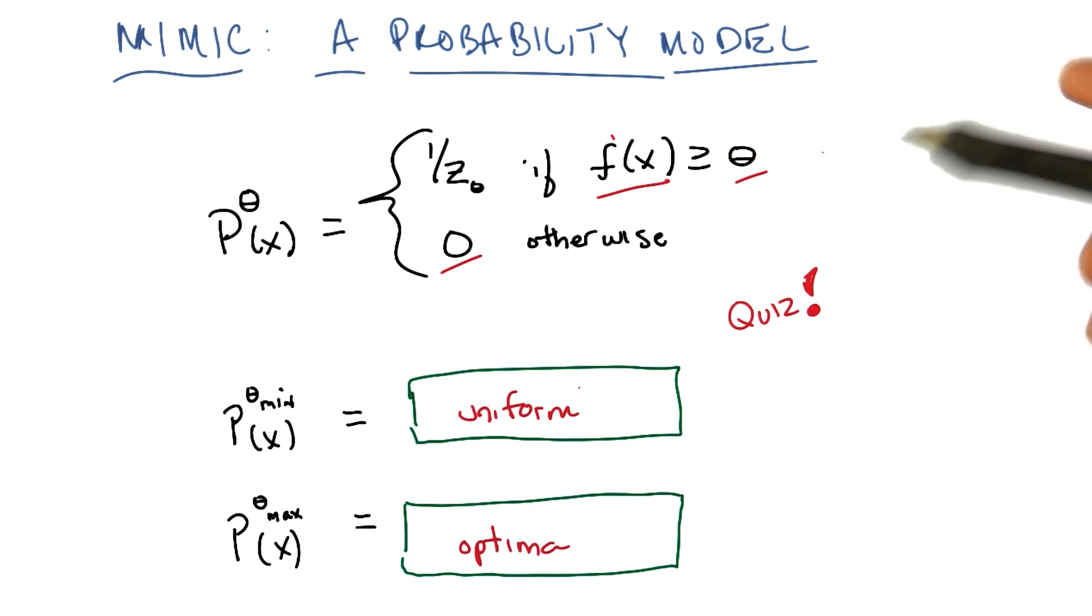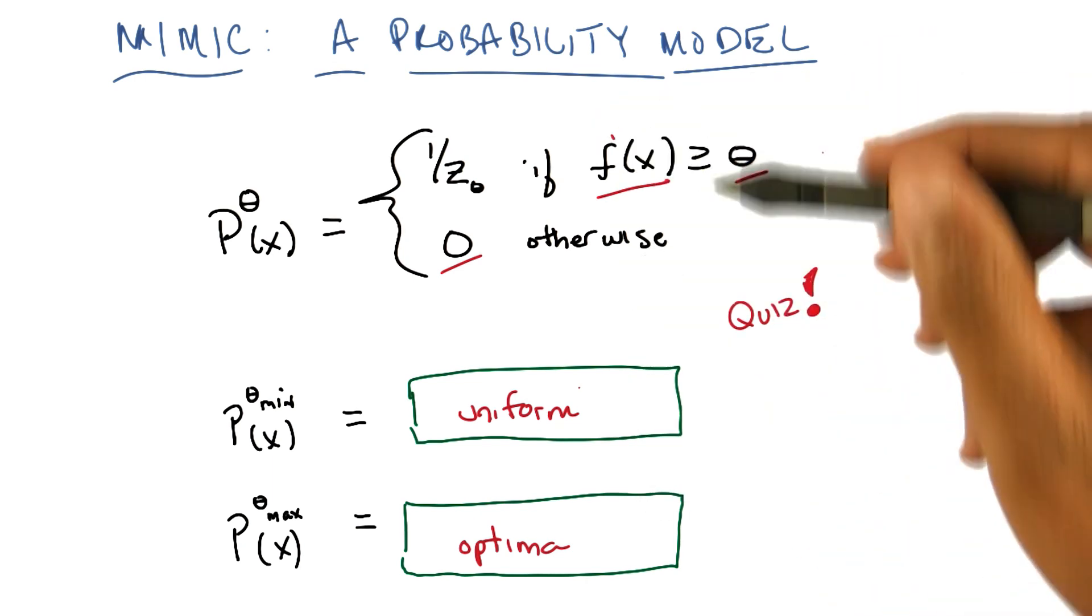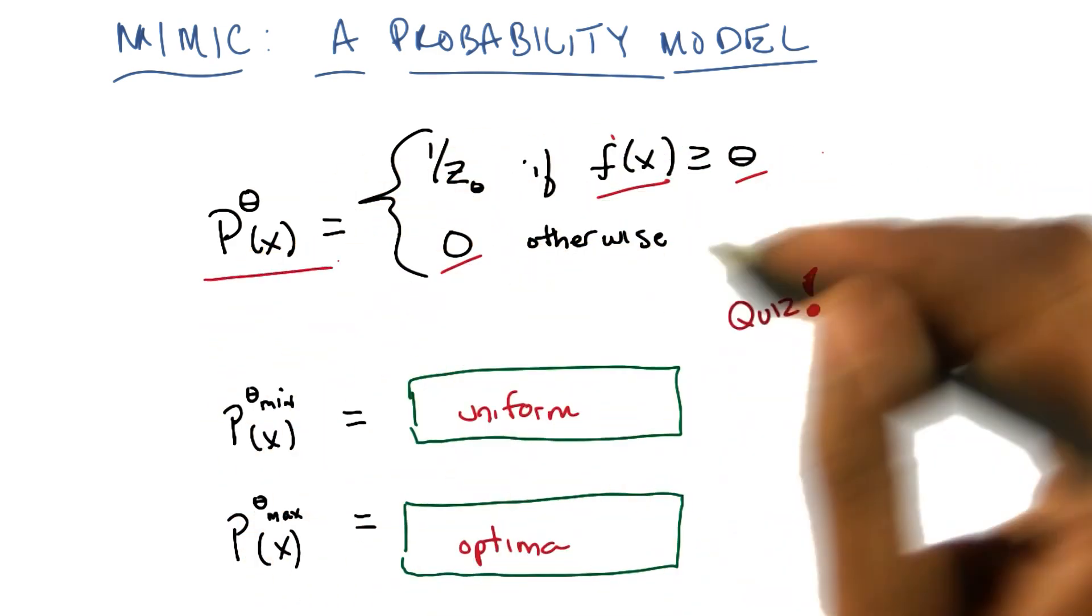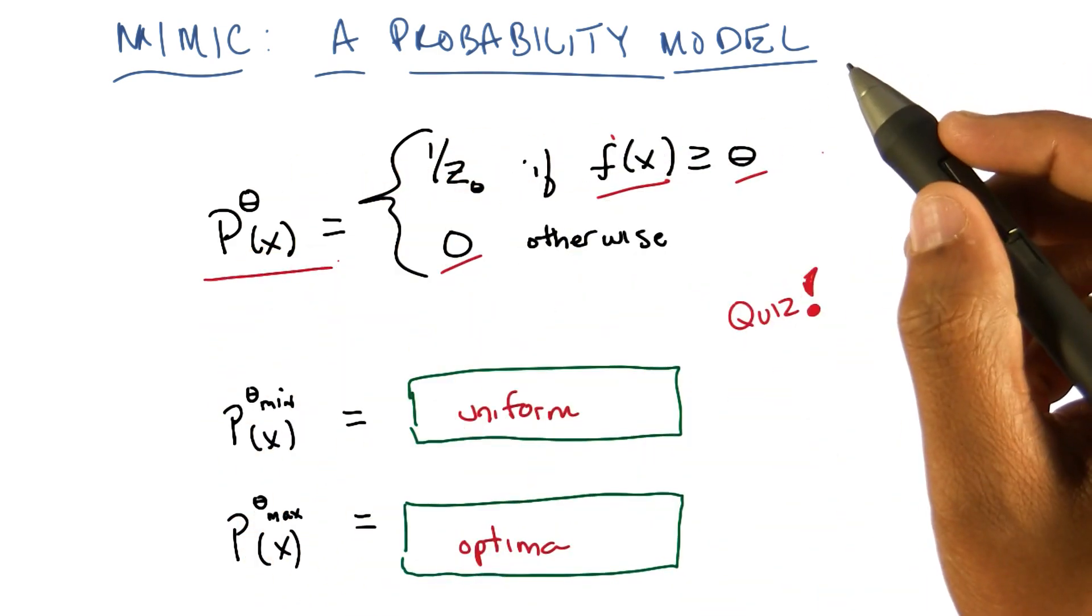Now, this is going to be pretty cool because in this slide right here, we basically have the mimic algorithm. I'm not seeing it. Well, I'm about to tell you. We are basically going to try to estimate this particular distribution, p sub theta of x.